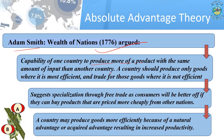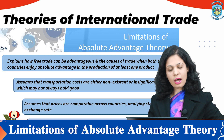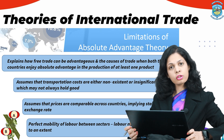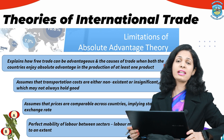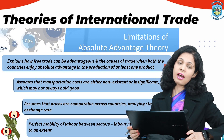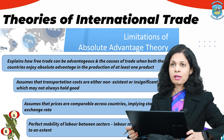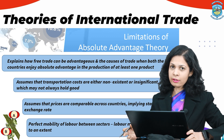This theory suggests specialization through free trade, as consumers will be better off buying products priced more cheaply from other nations. Indians get better quality cloth at reasonable prices by trading with Pakistan, and Pakistani citizens enjoy Indian wheat. A country may produce goods more efficiently due to natural or acquired advantage in productivity. However, the theory's limitation is that it only explains trade when both countries enjoy an absolute advantage in at least one product.